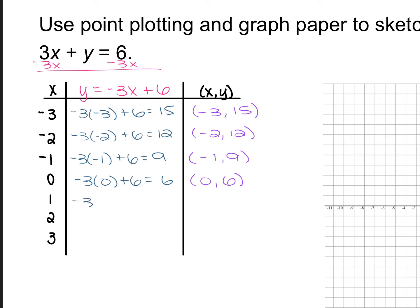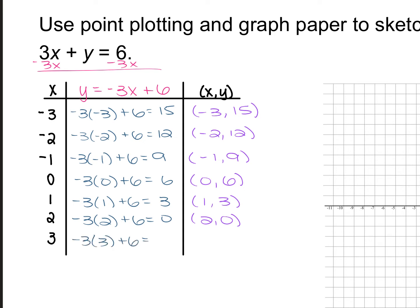For x = 1: -3 times 1 + 6 = -3 + 6 = 3, giving ordered pair (1, 3). For x = 2: -3 times 2 + 6 = -6 + 6 = 0, giving (2, 0). And lastly, for x = 3: -3 times 3 + 6 = -9 + 6 = -3, giving the ordered pair (3, -3).